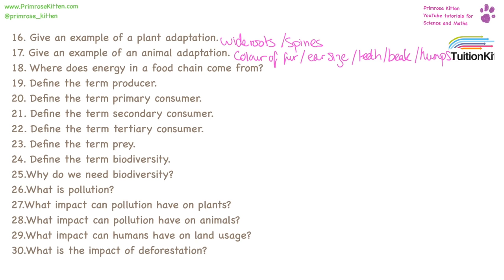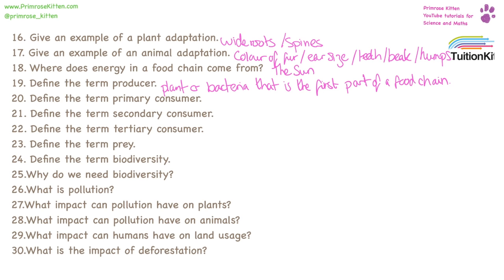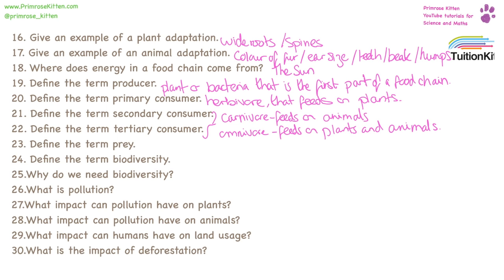The energy in a food chain, at the beginning, all comes from the sun. A producer is an organism, generally a green plant or bacteria, which is at the first part of a food chain. A primary consumer is going to be a herbivore that feeds on plants. A secondary consumer and tertiary consumer are going to be carnivores or omnivores — carnivores who just feed on other animals, omnivores who feed on plants and animals. Tertiary consumers are generally the topmost level in a food chain.